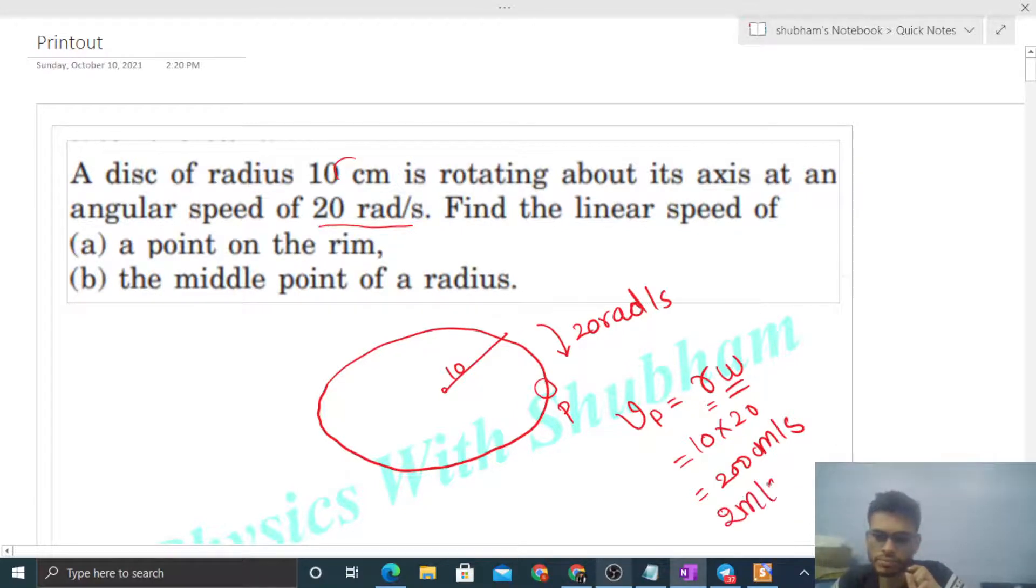Now take any point let's say Q which is half the radius. So when the point Q is half the radius, its distance from the axis of rotation will be 5 centimeter. So what will be the linear velocity of point Q? That will be r omega, r is 5.